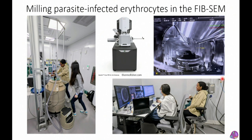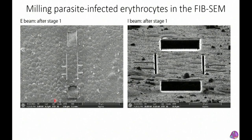At the FIB-SEM — here are my students Mezi and Jing cooling down the microscope and loading the sample. Inside, there's an electron beam and an ion beam: the scanning electron beam images from the top, perpendicular to the grid surface, while the ion beam comes in nearly parallel to the grid surface to ablate material. You can image with the SEM at the same time as you use the ion beam to mill.